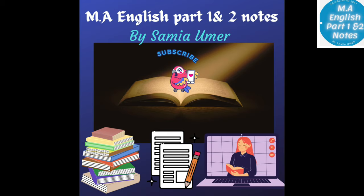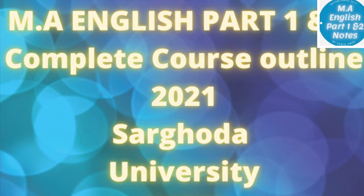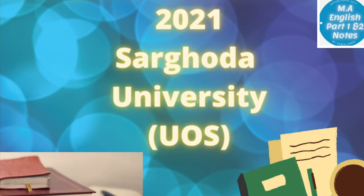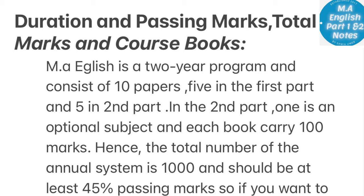Dear students, today I'm going to cover a very important topic that mostly students are asking for — that is MA English Part One and Two complete course outline 2021 of Sargoda University. I will cover all sub-points: books, duration, passing marks, total marks, and course books.